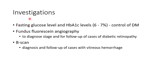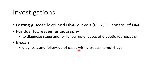Now let us see about the investigations which need to be done for a case of diabetic retinopathy. Fasting glucose level and HbA1c levels should be measured for control of diabetes mellitus. HbA1c should ideally be between 6 to 7 percent. Fundus fluorescein angiography should be done to diagnose, stage, and follow up cases of diabetic retinopathy. B-scan should be done for diagnosis and follow-up of cases with vitreous hemorrhage.